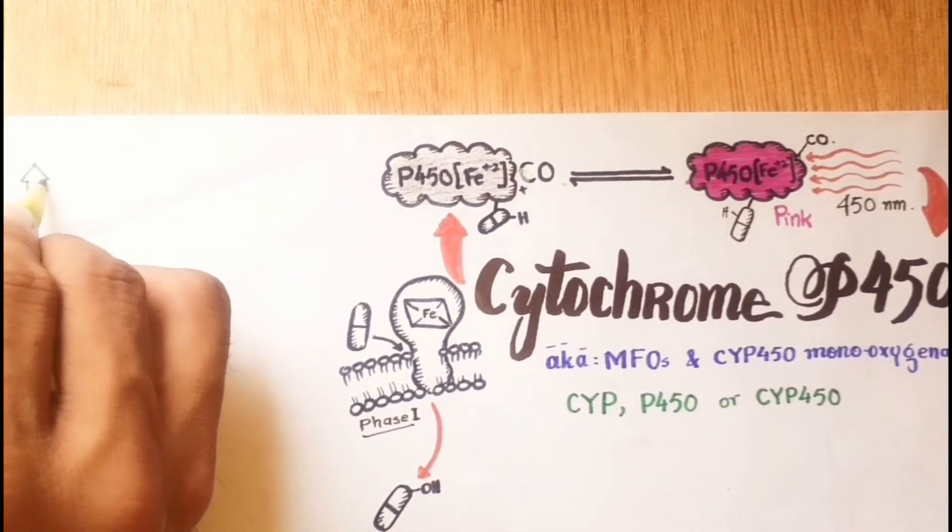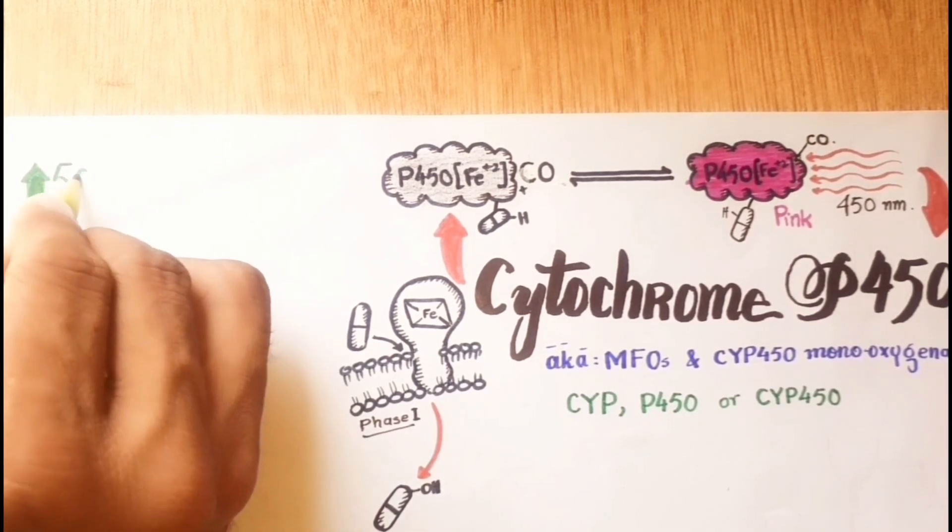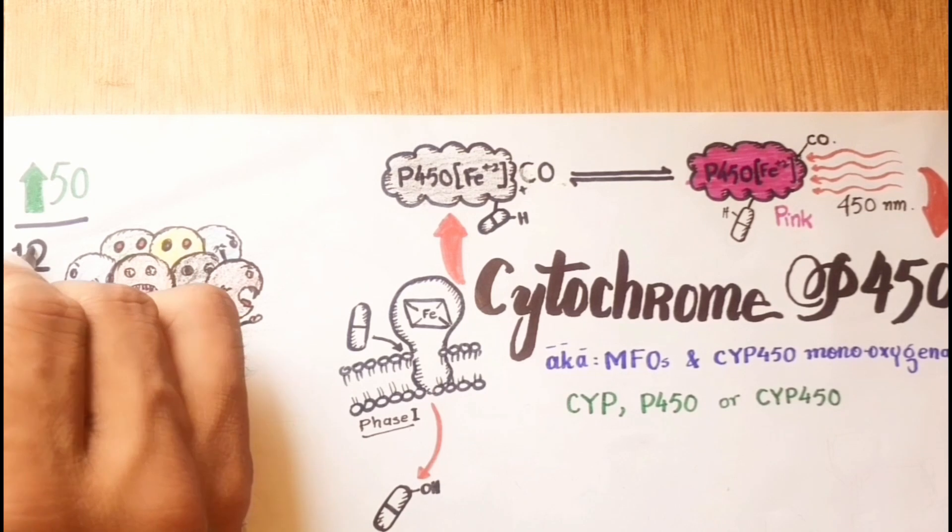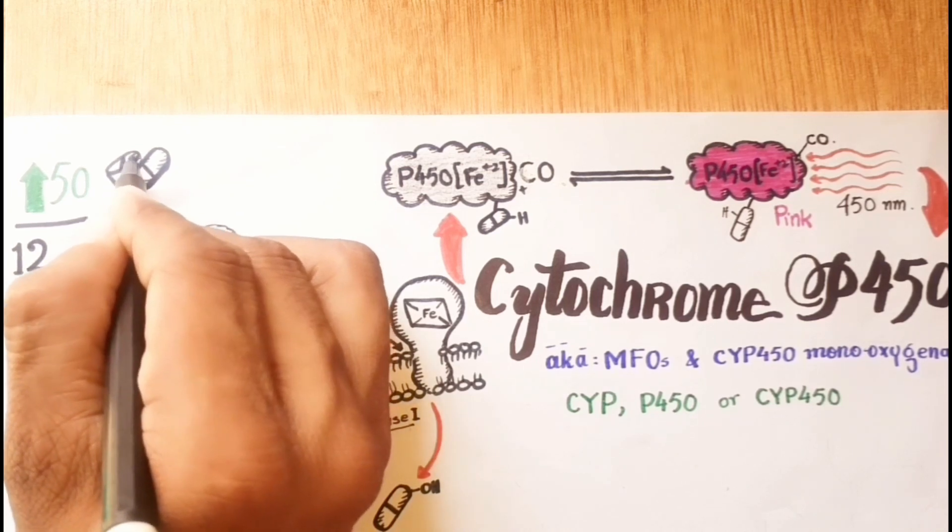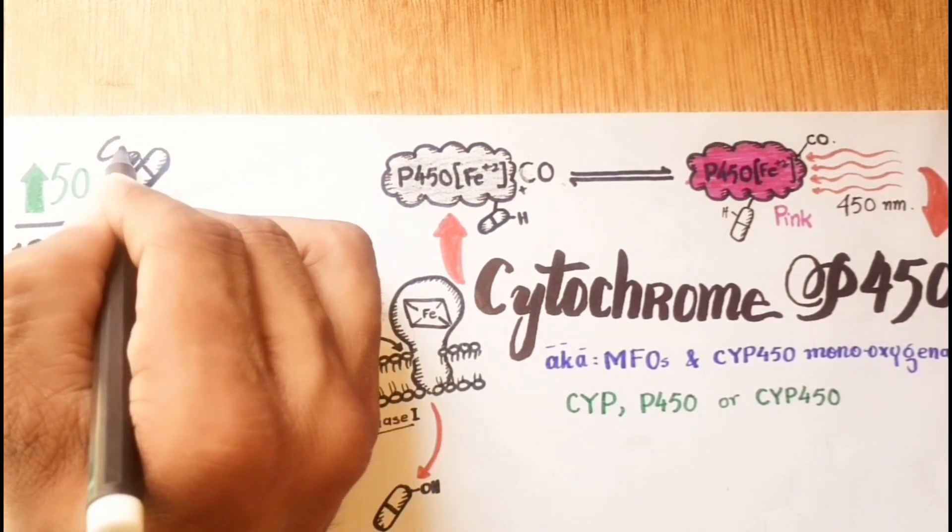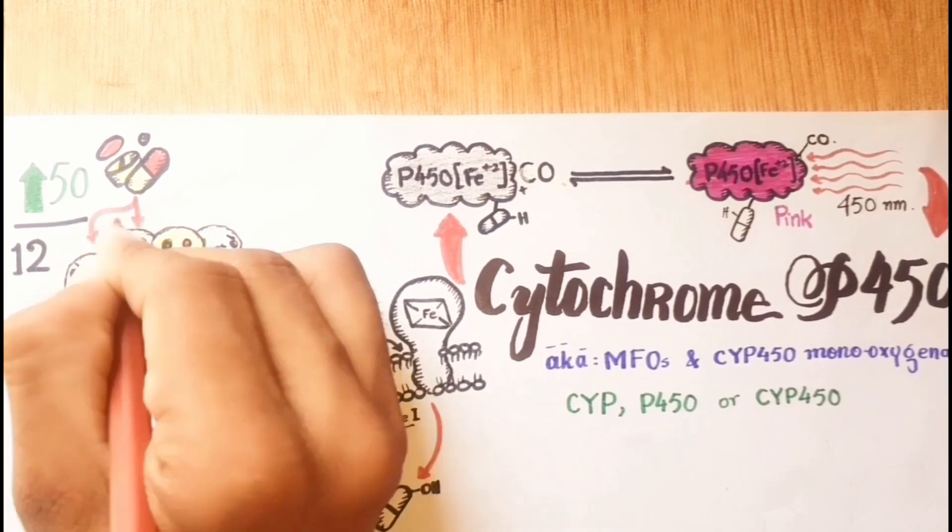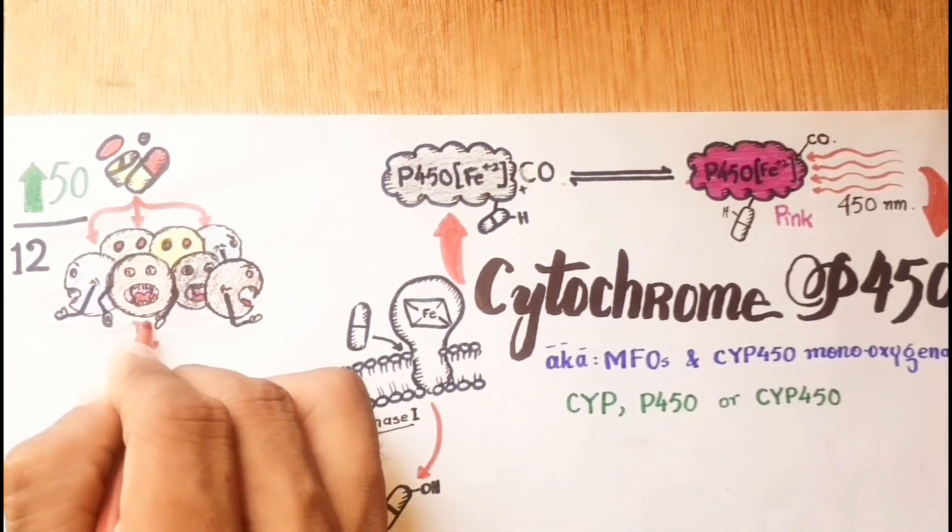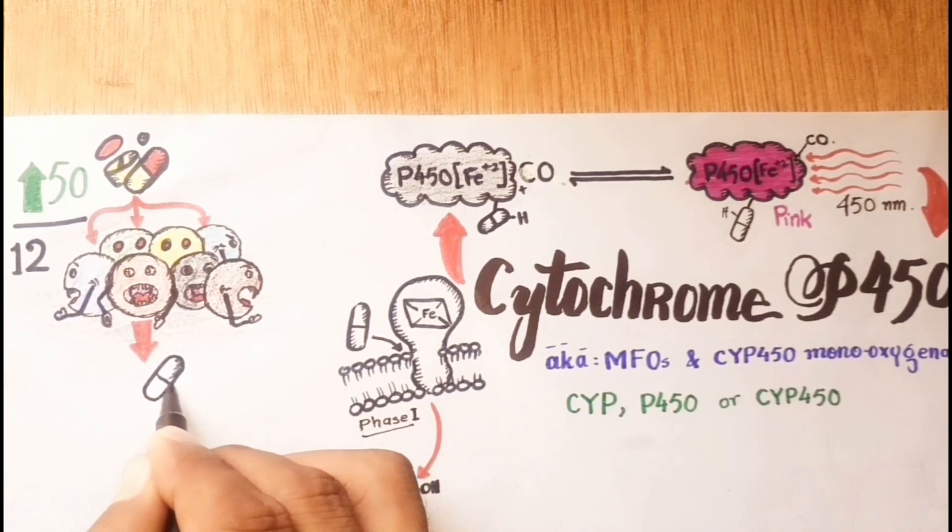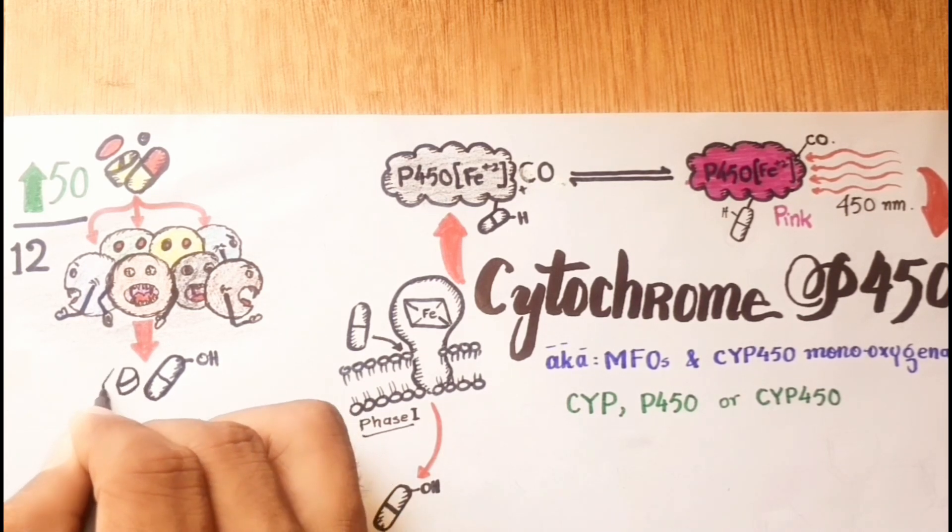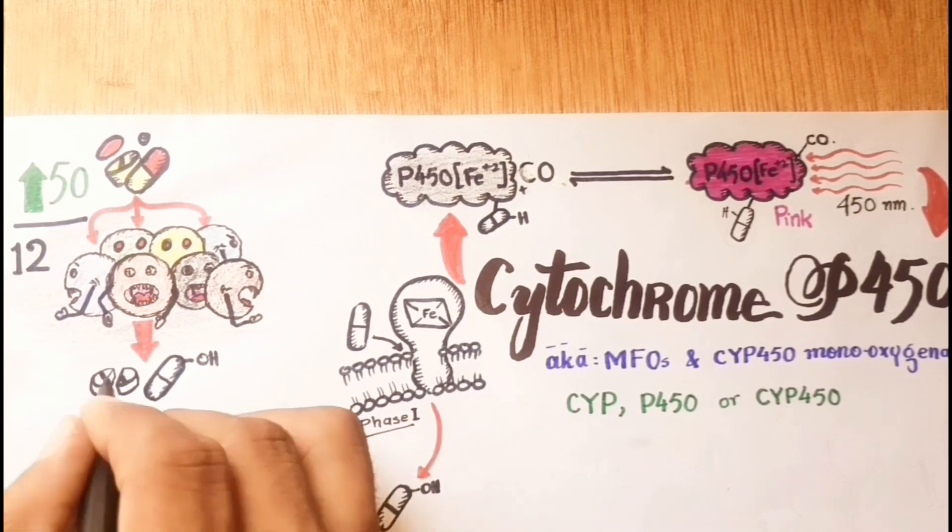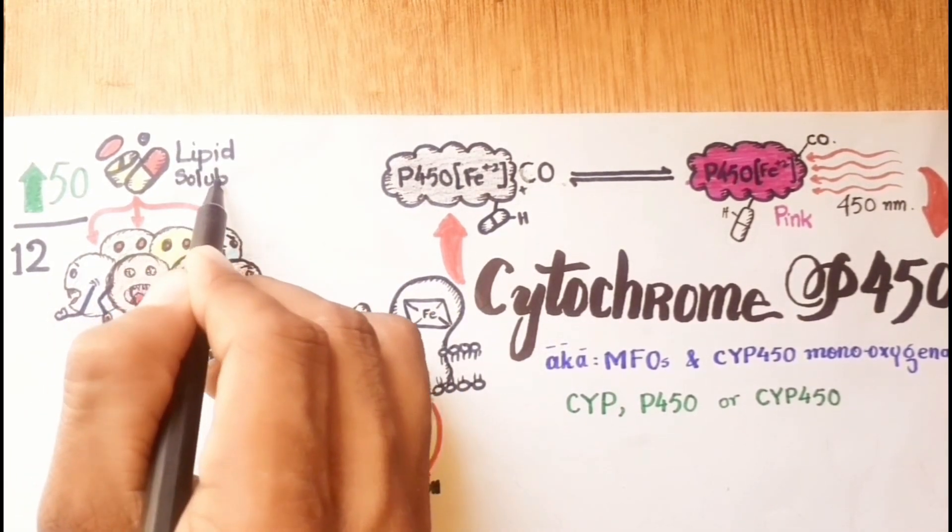In humans, over 50 individual P450s have been identified, but only about 12 are involved in the metabolism of most drugs. Each member catalyzes the biotransformation of a unique spectrum of drugs with some overlap in substrate specificities and may act on the same substrates but at different rates. The only common feature of the many drugs metabolized by this pathway is lipid solubility.